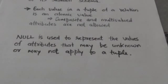A special value called null is used to represent the values of attributes that may be unknown or may not apply to a tuple.